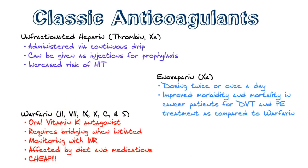Number one would be unfractionated heparin. Unfractionated heparin inhibits thrombin and factor 10a. It's generally administered via continuous drip, but you can give it subcutaneously for prophylaxis against DVTs, or deep venous thrombosis. Note that the use of unfractionated heparin has an increased risk of developing heparin-induced thrombocytopenia.